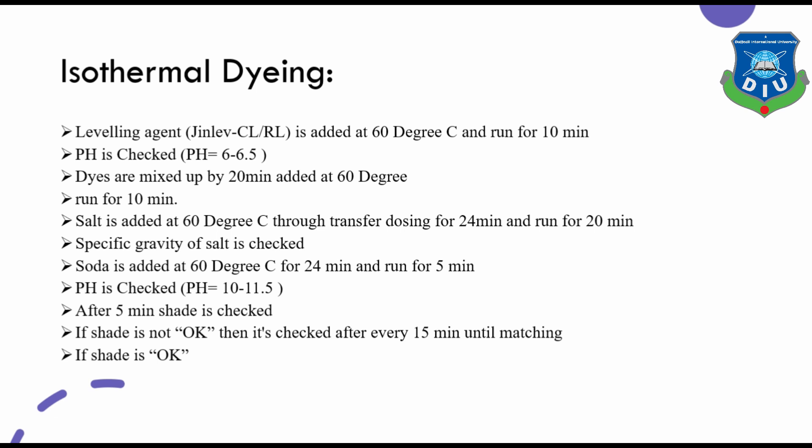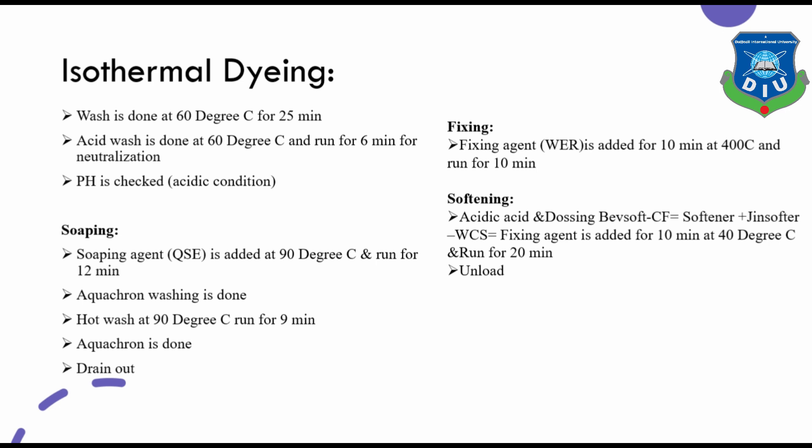Then add soda at 60 degrees centigrade for 24 minutes and run for 5 minutes. Check the pH — if 10 to 11.5, after 5 minutes check the shade. If the shade is acceptable, check again every 15 minutes until matching. If the shade is OK, proceed to wash at 60 degrees centigrade for 25 minutes. Then acid wash at 60 degrees centigrade for 6 minutes for neutralizing. Check the pH.